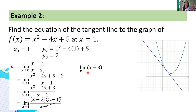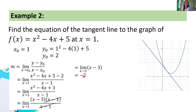Using theorem number 2, we solve for f(1) to find the limit of (x minus 3) as x approaches 1. Substituting: 1 minus 3 = negative 2. Hence, the slope of the tangent line is negative 2.